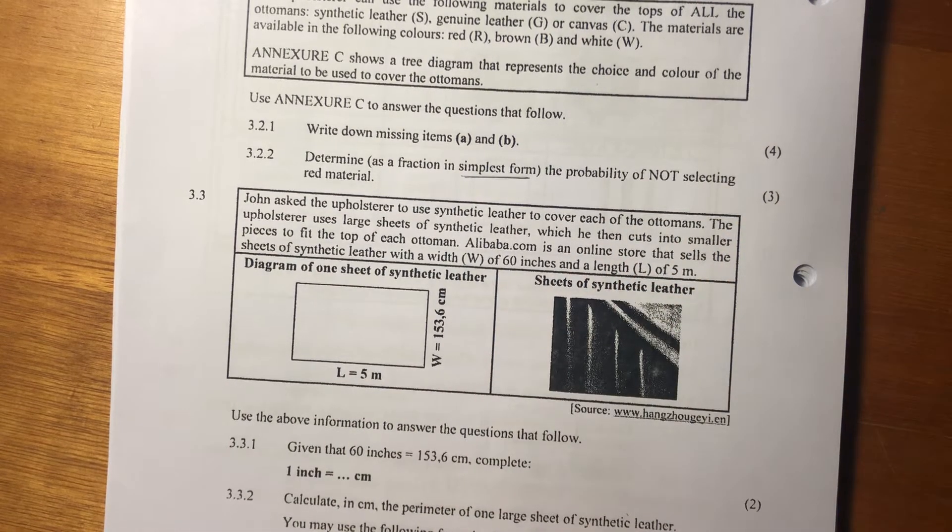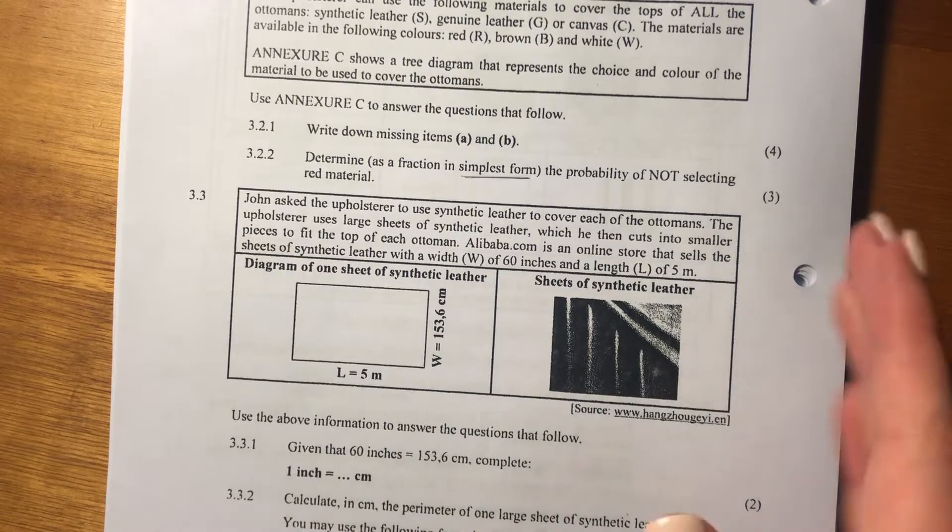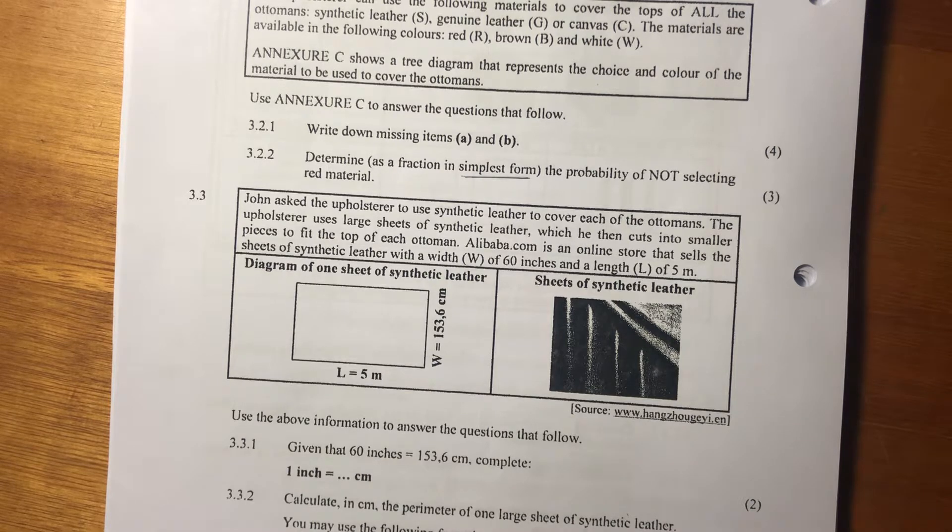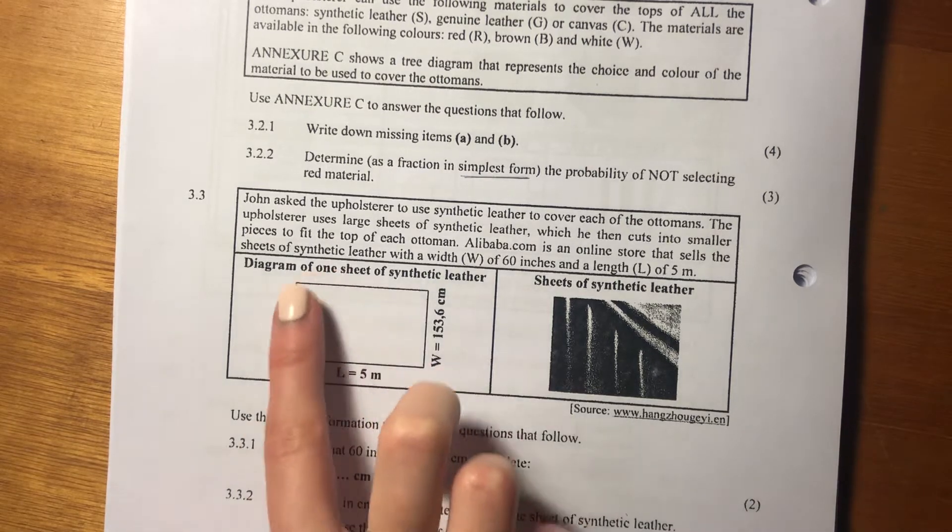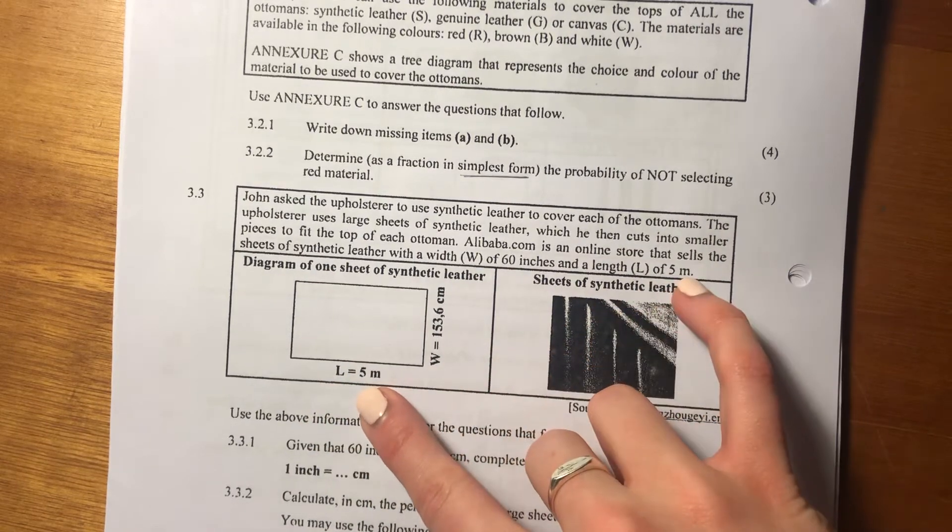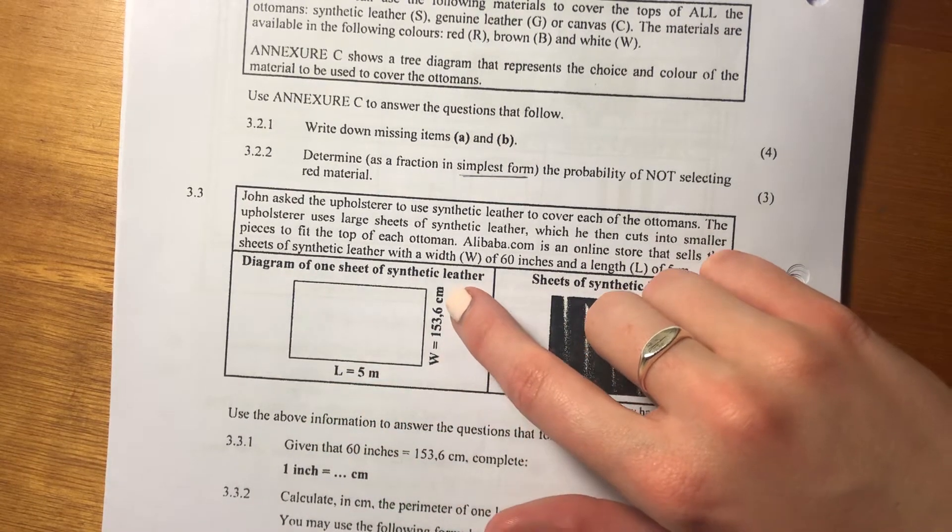So we know automatically, before we've even looked at questions, we have something in inches and something in meters. We're probably going to have to do some conversions. So we should be thinking that at the front of our mind. And they've drawn us a little diagram here. So they've given us the length in meters, which is 5 meters.